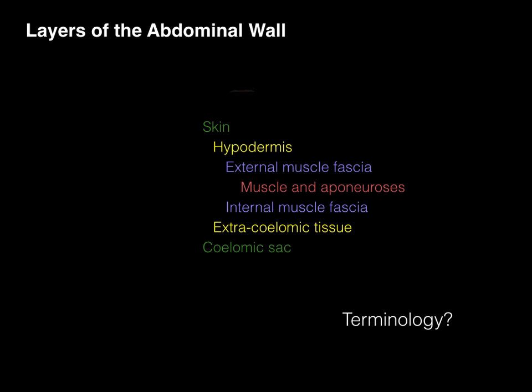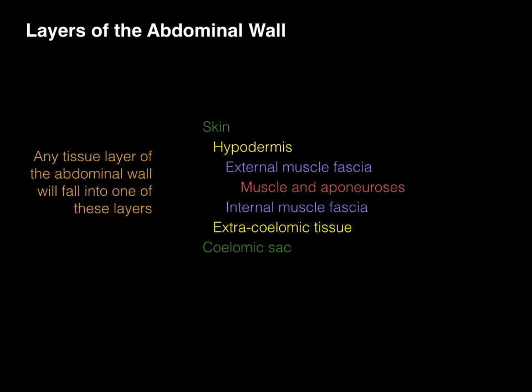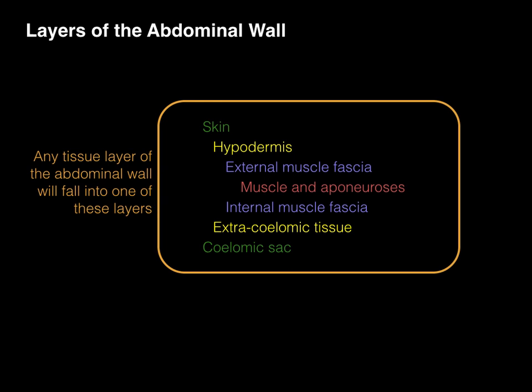Some of you might be saying: I recognize skin, hypodermis, and muscle and aponeuroses — those are the muscles derived from the somites — but some of these other ones are a little more unfamiliar. We'll cover them as we go. The power of this framework is that any tissue layer of the abdominal wall will fall into one of these seven layers, no matter what we are learning.